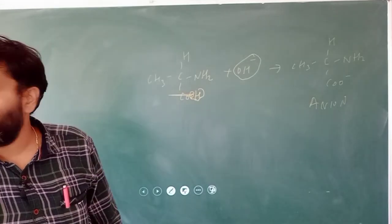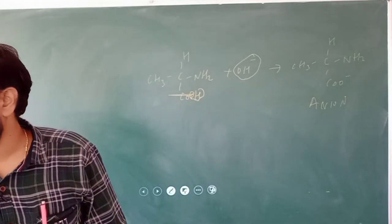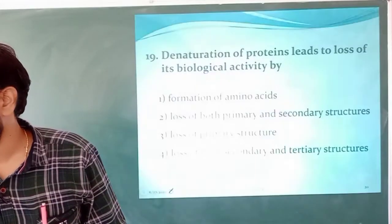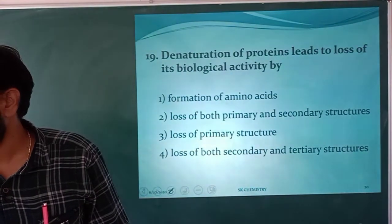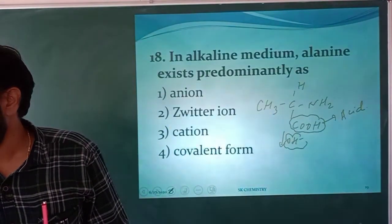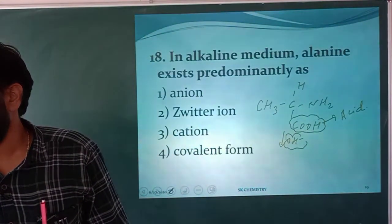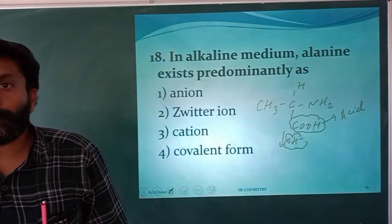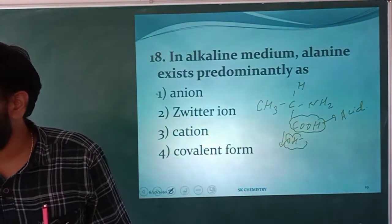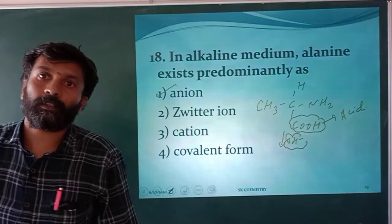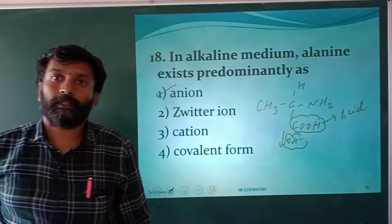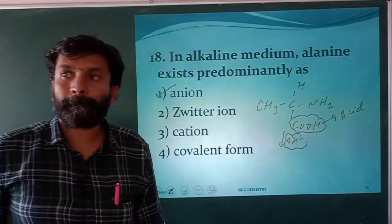So you will be getting Option A — alanine in alkaline medium exists predominantly as an anion.